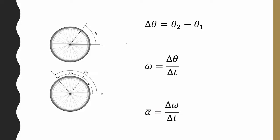We're looking at the same basic quantities with the same relationships, just using different symbols. Instead of x for position, we use theta (θ) for angular position. A change in position is still called displacement, change in displacement over time is still velocity, and change in velocity over time is still acceleration. We use different symbols: omega (ω), a Greek letter that looks like a W, for angular velocity, and alpha (α), a Greek letter that looks like a curvy 'a', for angular acceleration.